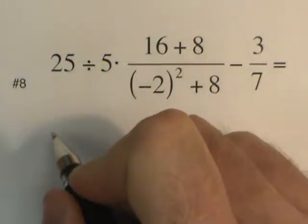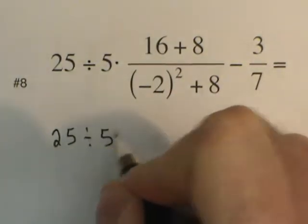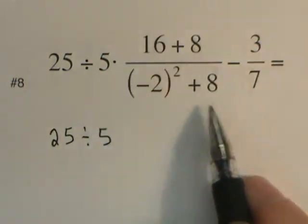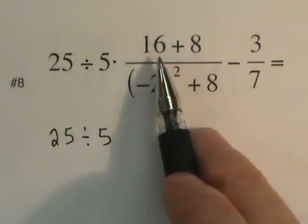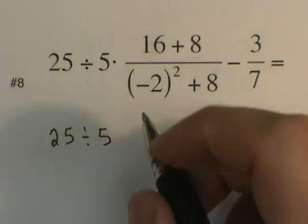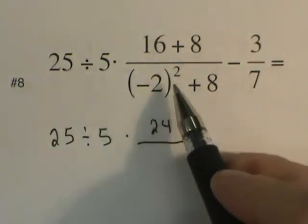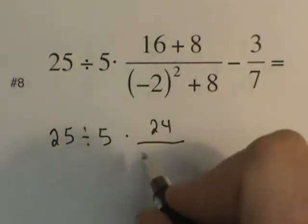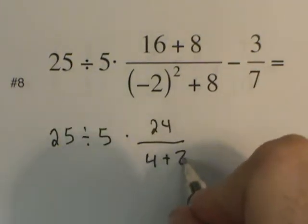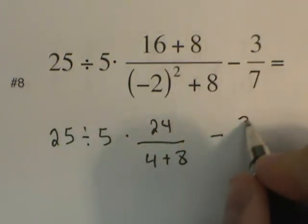And so the first thing I'm going to do is rewrite the 25 divided by 5. And then as I look at this fraction, I want to simplify what's here. So I have the 16 plus 8, which can be written as 24. Negative 2 squared is going to be positive 4 plus 8 minus 3 sevenths.